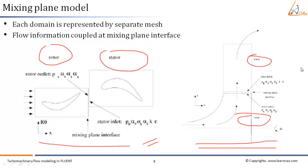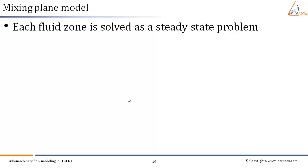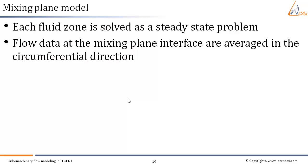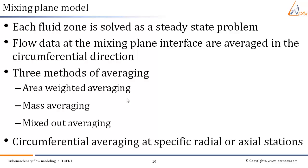The flow information between these domains is coupled at the mixing plane interface using the mixing plane model. The main idea is that each fluid zone is solved as a steady-state problem. At specified intervals, flow data at the mixing plane interface are averaged in the circumferential direction on the stator outlet and rotor inlet boundary. When Fluent averages the flow data there are three options: area-weighted average, mass-weighted average, and mixed-out average. Fluent first performs circumferential averaging at specific radial or axial stations, which defines profiles of boundary condition flow variables.